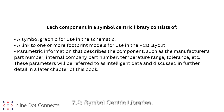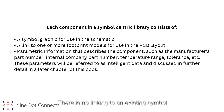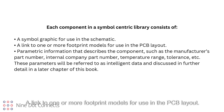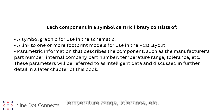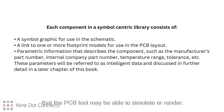Section 7.2: Symbol-Centric Libraries. In a symbol-centric library, each component in the library is defined by the symbol. The graphic of the symbol is embedded, not linked. Thus, each component has its own symbol graphic; there is no linking to an existing symbol model. Each component consists of a symbol graphic for use in the schematic, a link to one or more footprint models for the PCB layout, and parametric information such as manufacturer's part number, internal company part number, temperature range, tolerance, etc. These parameters will be referred to as intelligent data, discussed in further detail in a later chapter. It may also contain SPICE and signal integrity simulation models, or other models that the PCB tool may be able to simulate or render.